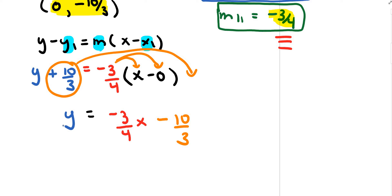Now I need to change this into standard form. Looking at the denominators, I have a 4 and a 3, so the least common multiple is 12. Let's multiply everything by 12.